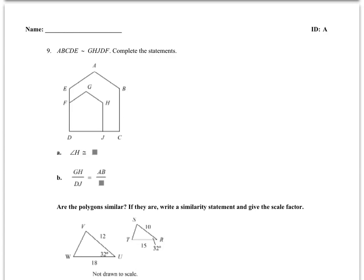For this next problem, they tell me that I have similar polygons and they want me to complete the statements. So angle H is congruent to which angle? Here's H. Clearly, it's congruent to B. I can also check my name. H is the second letter and B is the second letter. So I know angle B is my answer. And then I have GH over DJ is going to be equal to AB over DC. This is just finding patterns.